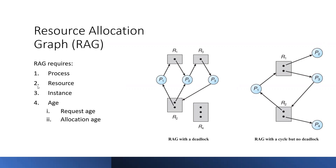We need to understand four things. What is a process? We will represent the process in a circle. We will represent the resources in a square box. We will represent the instance as a dot. There are two types of edges: request edge and allocation edge, represented with arrows. If a process is going to the resource, it is a request edge; if a resource is assigned to a process, it is called an allocate edge.